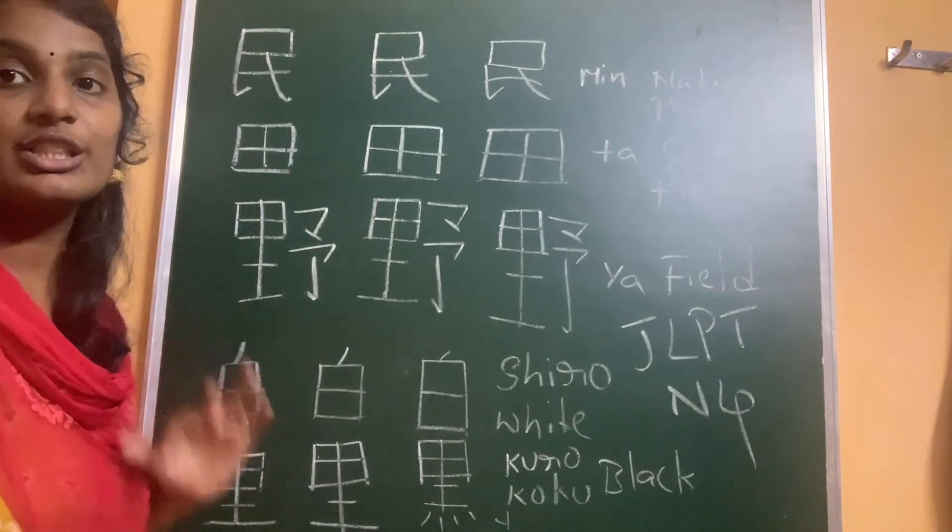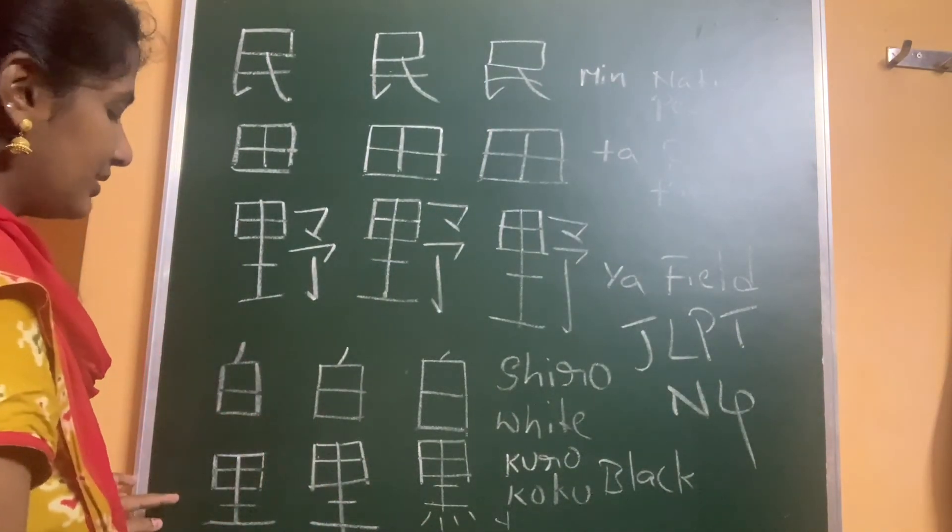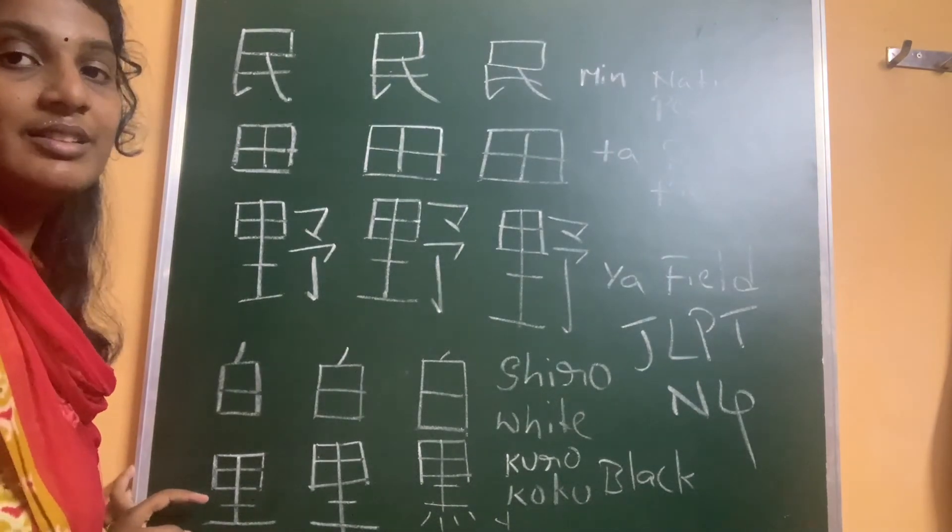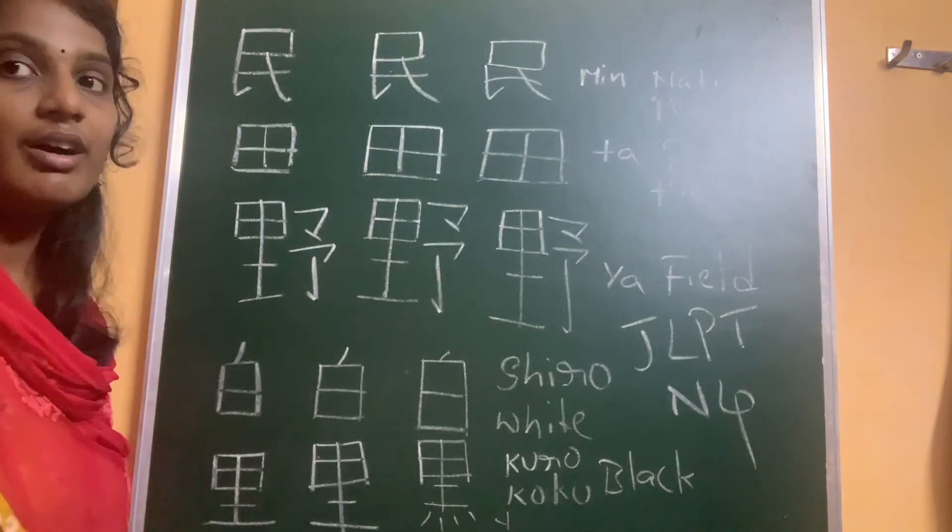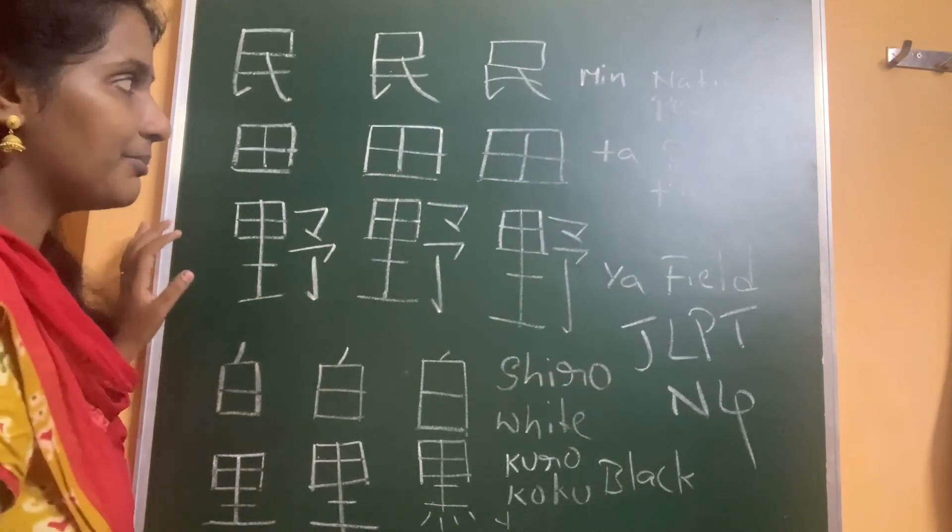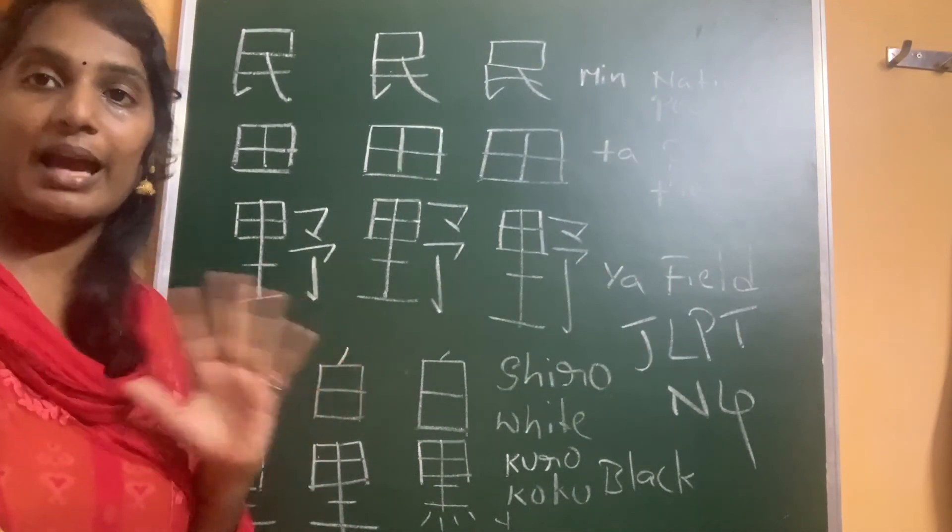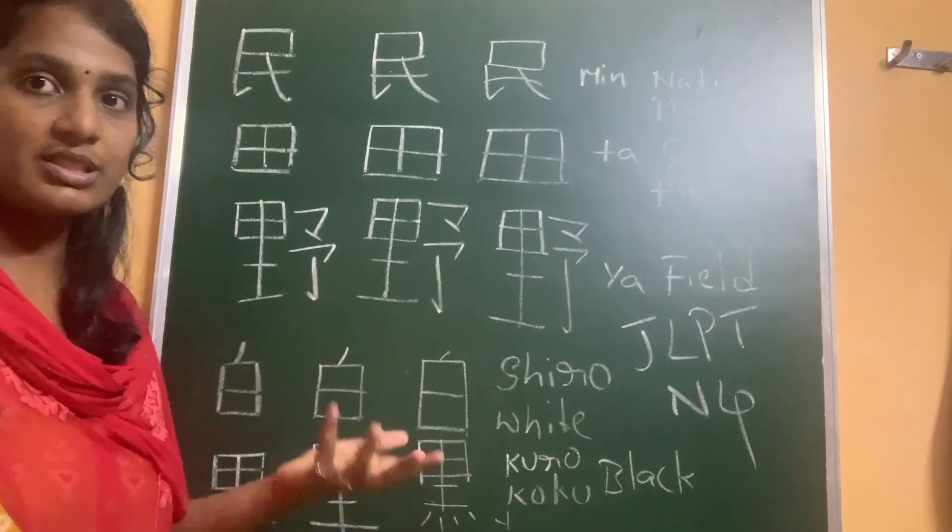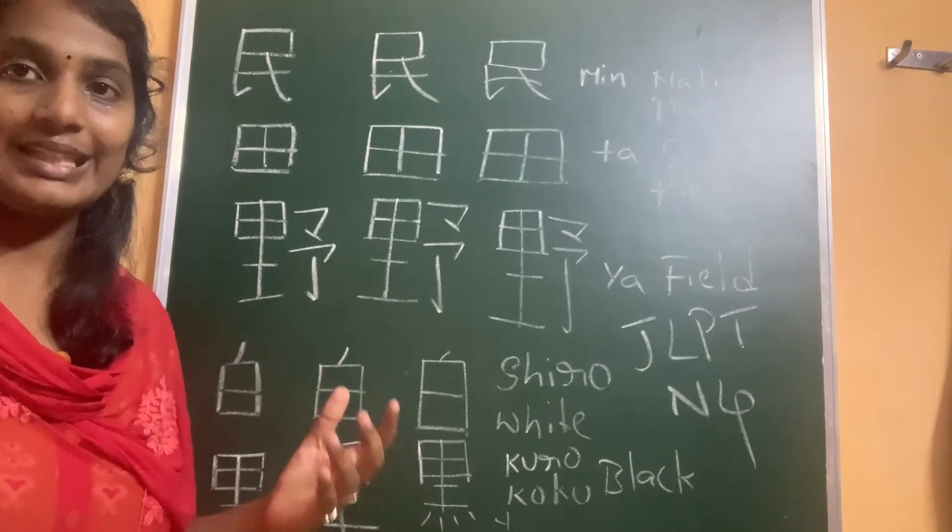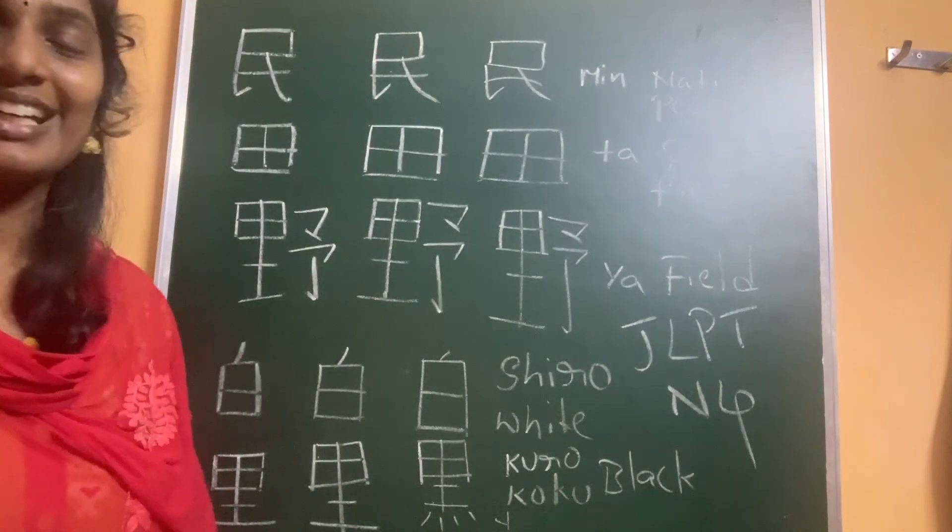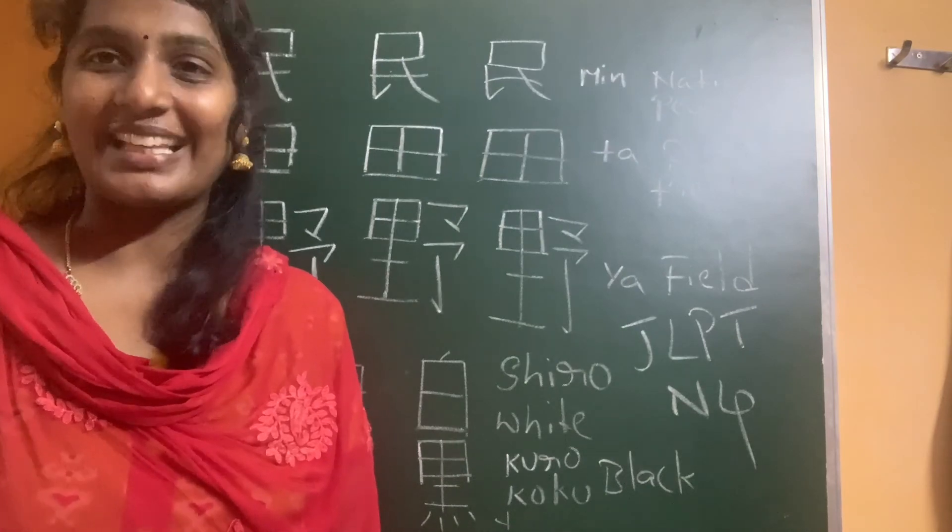Shiroi is an e-adjective. This is the kanji for black or black color, kuro or koku. For example, kokuban, which is blackboard. Kuroi is black color, which comes under e-adjective. These are the five kanjis. Arigatou gozaimasu. Ja mata ne.